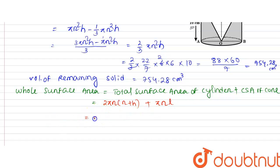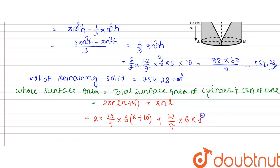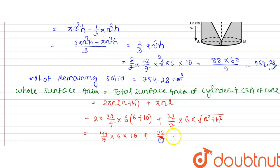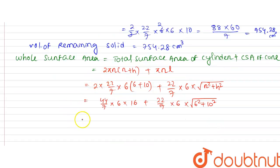Substituting values: 2 × (22/7) × 6 × (6 + 10) + (22/7) × 6 × l, where l = √(r² + h²) = √(6² + 10²) = √(36 + 100) = √136. This gives 44/7 × 6 × 16 plus 22/7 × 6 × √136.